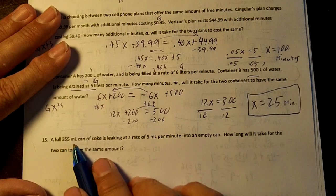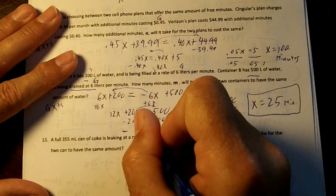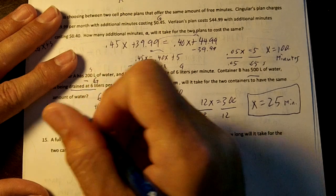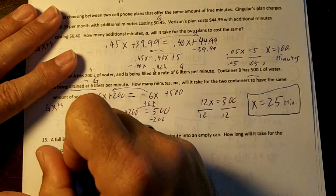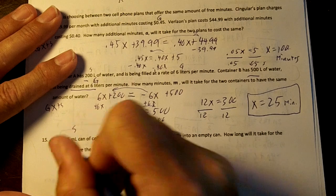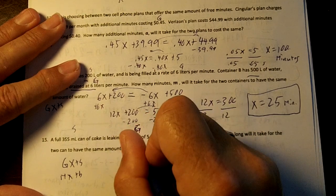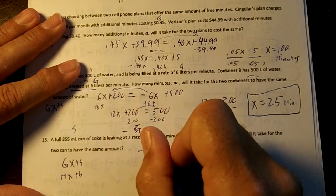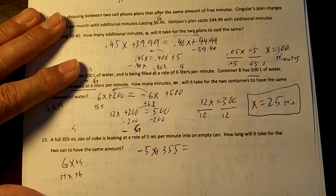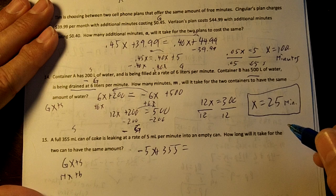A full 355-milliliter can of Coke is leaking at a rate. If it's leaking, that's a negative, right? At 5 millimeters per minute, that's our growing number. And this right here is our starting number. So we're going to use GX plus S. This eventually turns into MX plus B. It's a little bit easier to talk about your growing and starting. So we're going to have negative 5X plus 355 equals, how long will it take for the two cans to have...